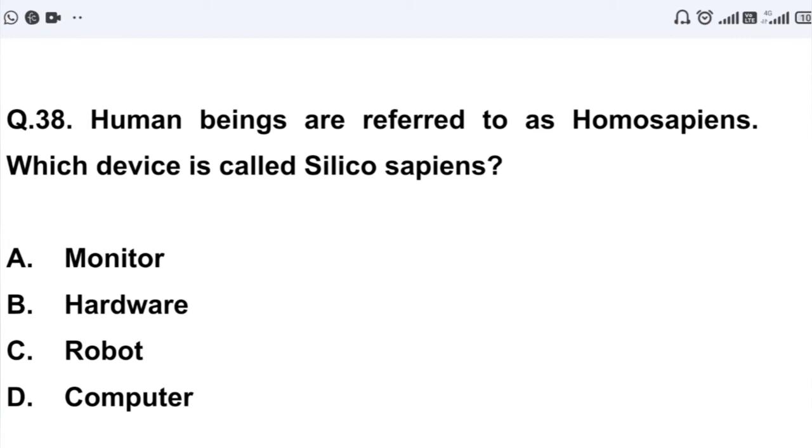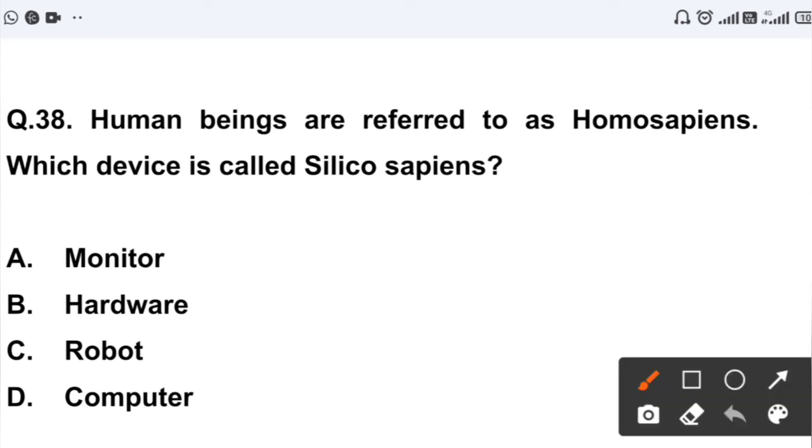Question number 38: Human beings are referred to as homo sapiens. Which device is called silico sapiens? Option A: monitor. Option B: hardware. Option C: robot. Option D: computer. Computer, so human beings, the scientific name is homo sapiens. The silico sapiens is which is computer's scientific name. The answer will be option D. Computer is the right answer.